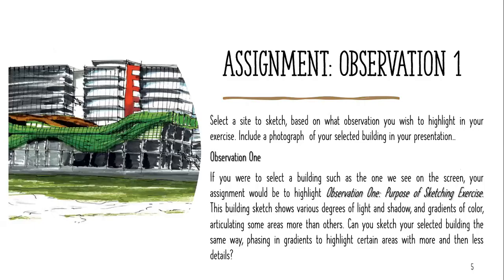Assignment one was about observation one. The assignment was to select a site to sketch based on the observation we want to highlight. Observation one is the purpose of sketching. So if we were to select a building, like the one on screen, the assignment would be to highlight that observation.